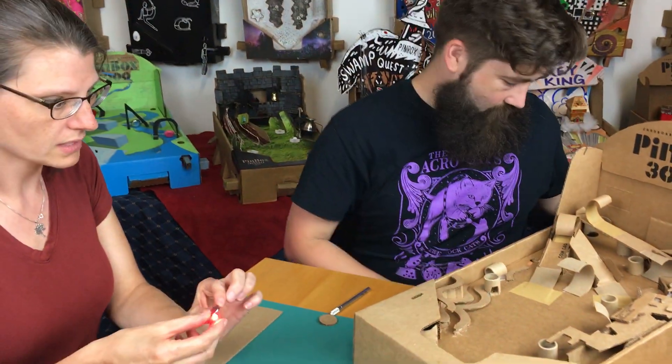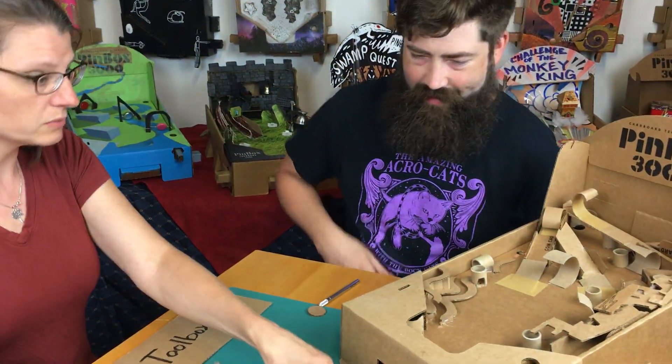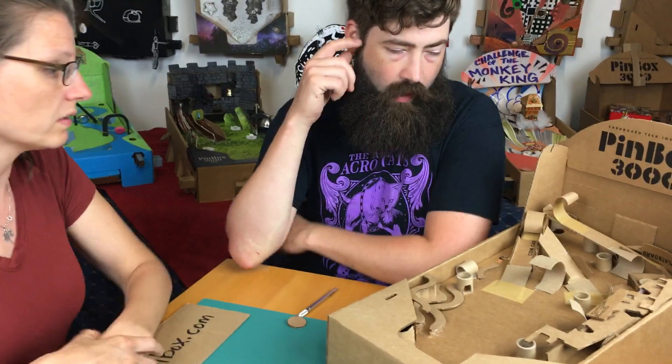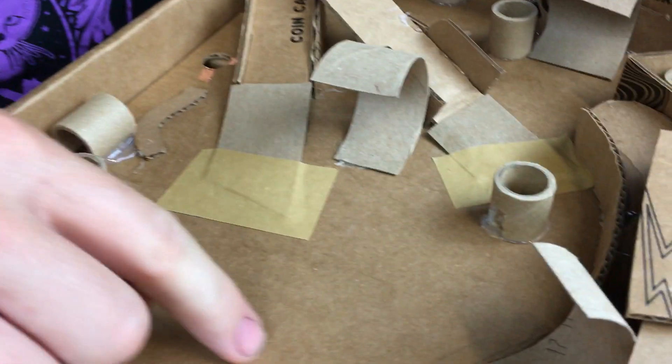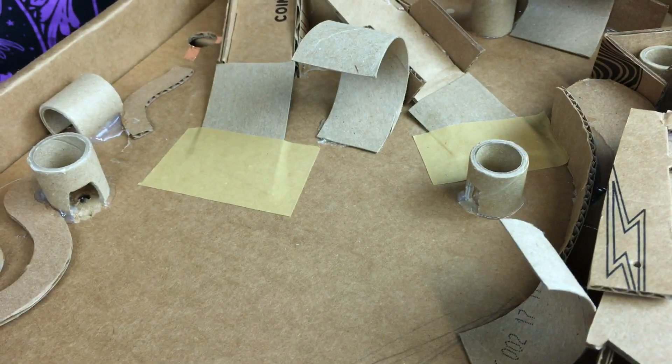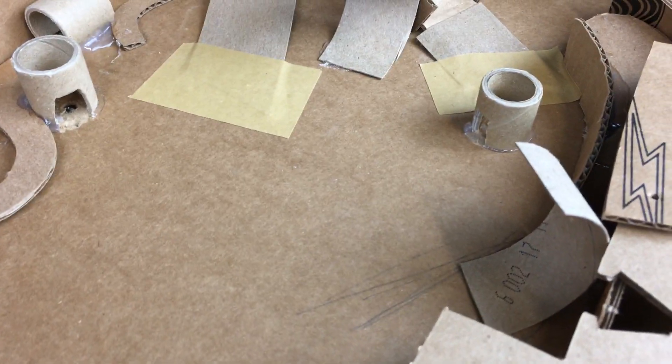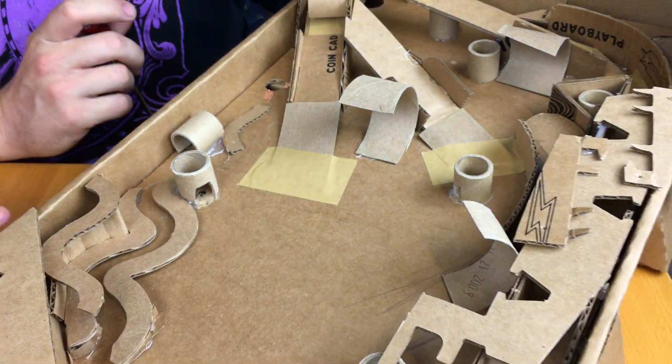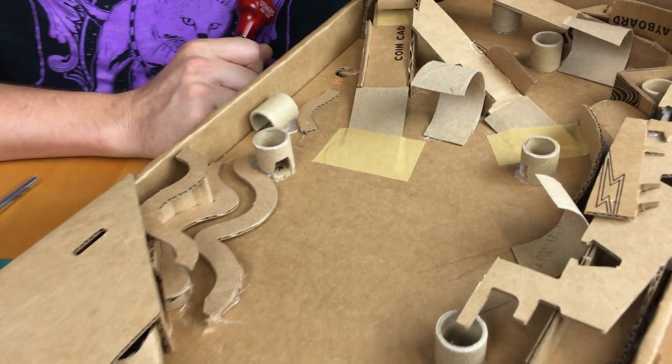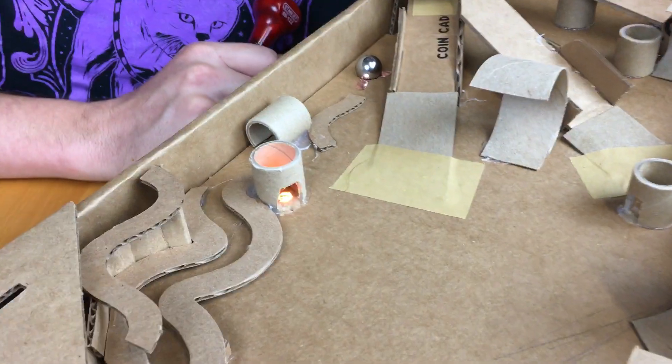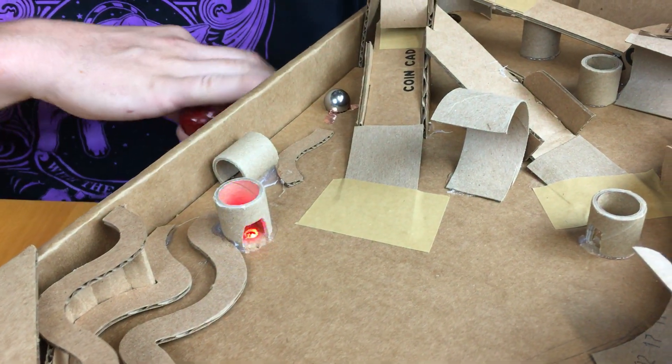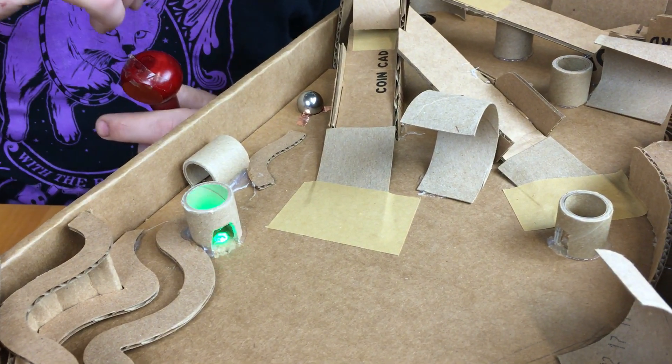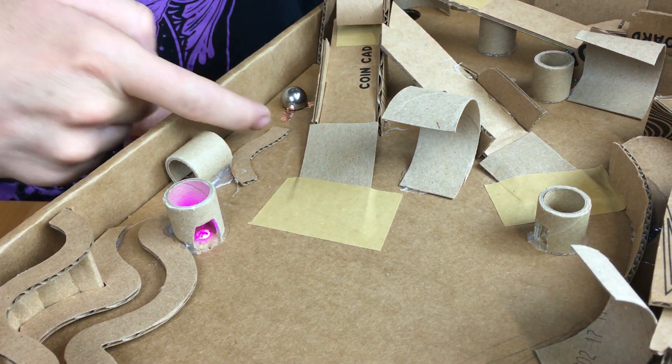First thing we should do is decide where we want the LEDs to go. I really like our disco hut - let's make another one there. The way this circuit works is it's called a ball lock. When the marble hits the hole, it gets stuck there, and because they're metal ball bearings, they complete the circuit and the electricity can flow. If you knock it out, the circuit breaks.